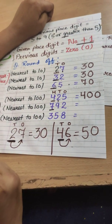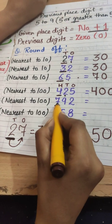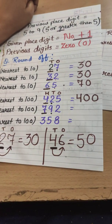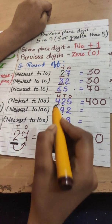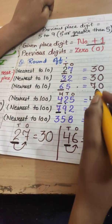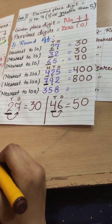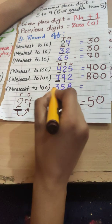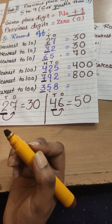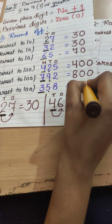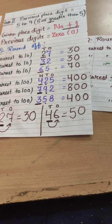Next, round 792 to the nearest hundred. The hundreds place digit is 7 and its previous digit is 9, which is greater than 5. So 7 becomes one step greater — 7 becomes 8 — and the rest become 0, giving us 800. For 358 rounded to the nearest hundred: the hundreds place digit is 3 and its previous digit is 5, which falls in the greater category, so 3 becomes 4 and the rest become 0 — answer is 400.